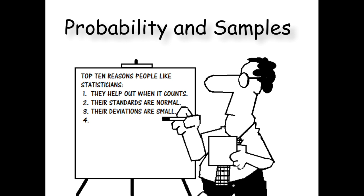Here's our next chapter: probability and samples. Please keep in mind all the stuff you learned about in the previous chapters with order of operations, everything you know about z-scores, and a unit normal table.